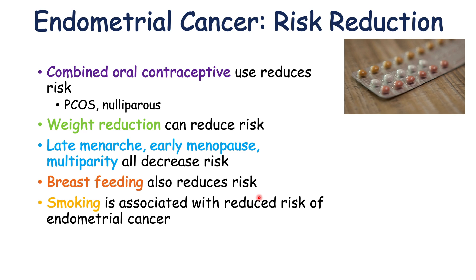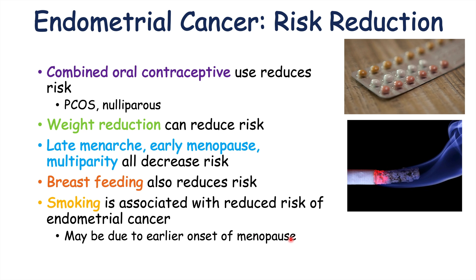Interestingly, smoking is associated with a reduced risk of endometrial cancer. Patients who smoke are actually at a reduced risk of endometrial cancer, although this would never be advised because smoking increases the risk of so many other types of cancer. The hypothesis is that smoking may reduce the risk of endometrial cancer due to earlier onset of menopause.